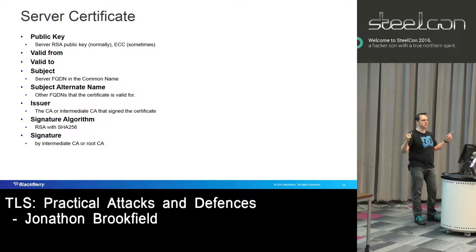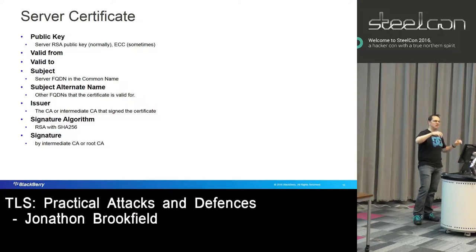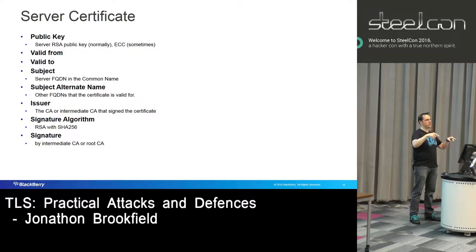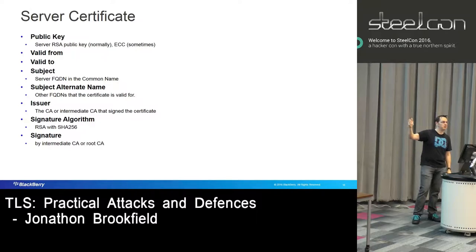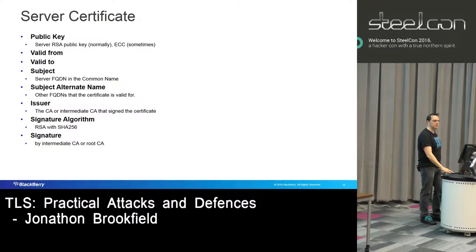You then have the issuer — a text field that should match the subject of the certificate that signed it. When you have a server certificate, it's normally signed by an intermediate CA. That intermediate CA will have a subject name, and that has to match the issuer. You then have the signature — this is where the intermediate CA's private key has signed this certificate, and it's the data that allows the client to recreate that signature and validate it was actually signed by the intermediate CA.